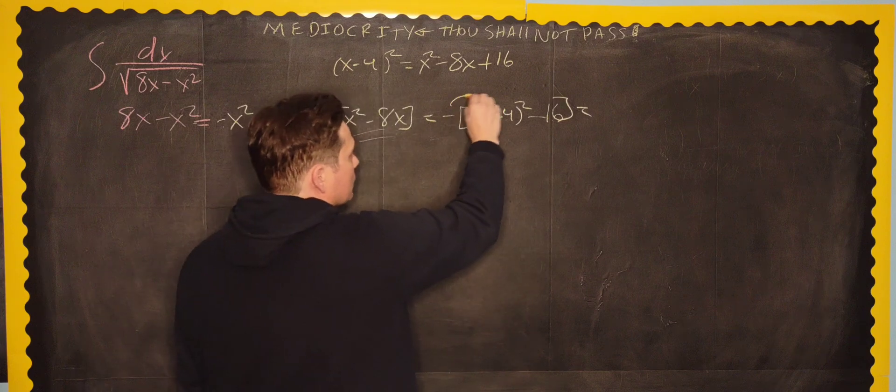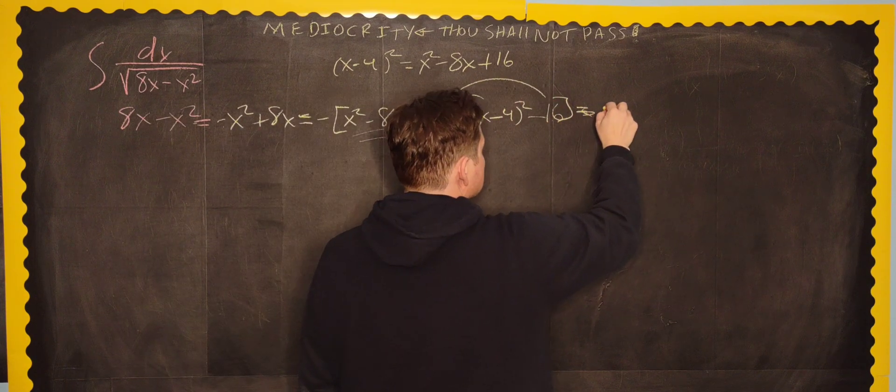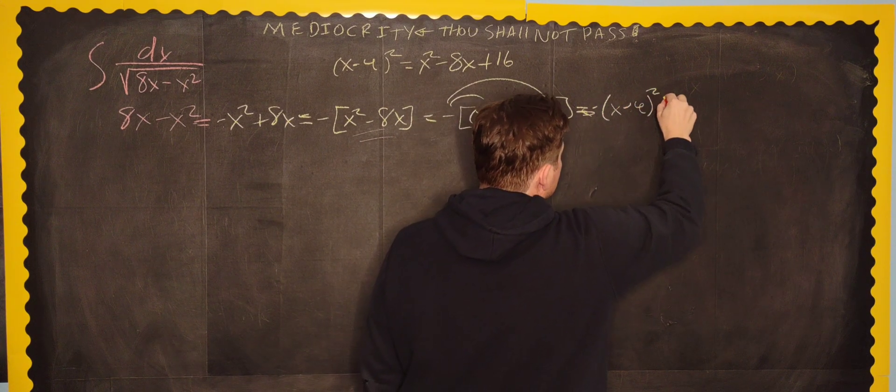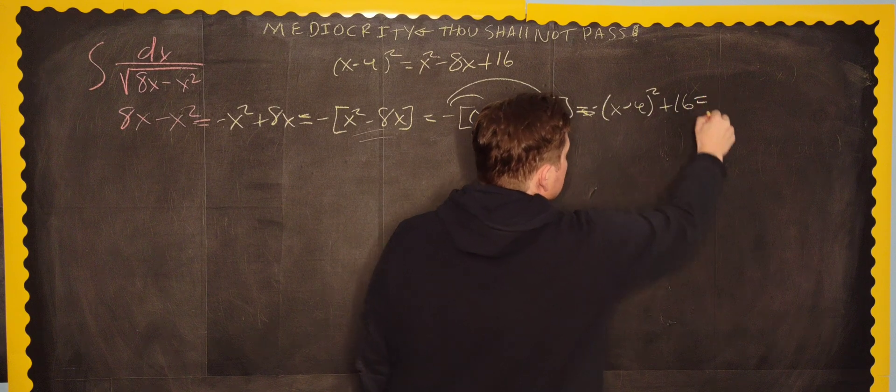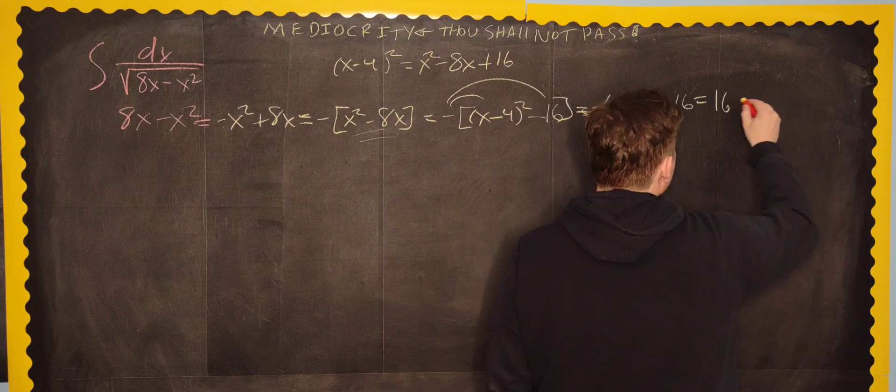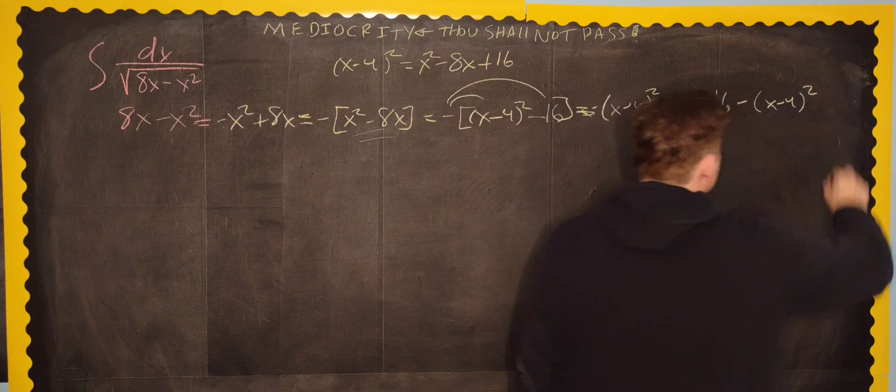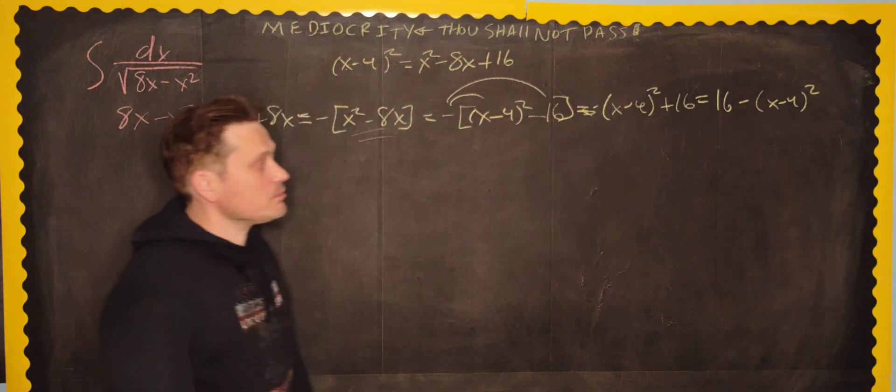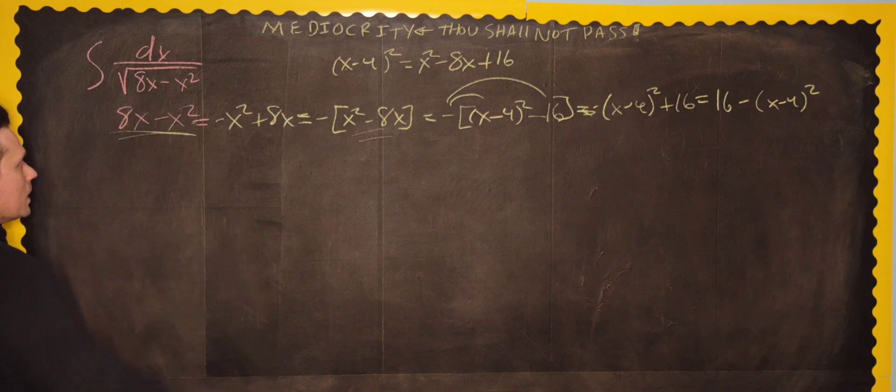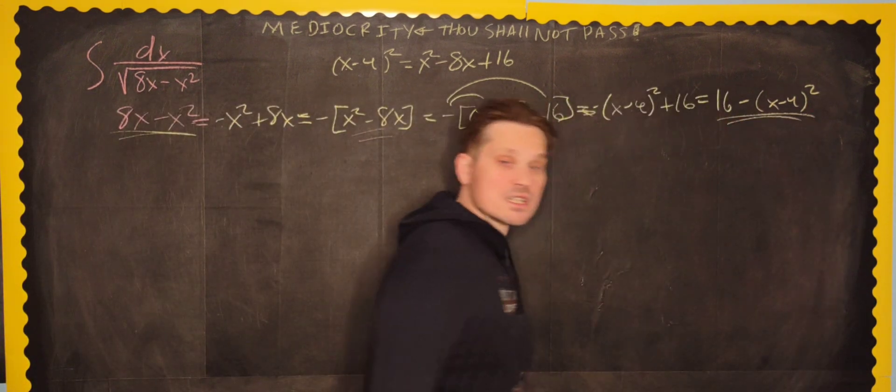And then you distribute the negative 1 back across this way. So you're going to end up with negative x minus 4 quantity squared, and then plus 16, which you can just as well write as 16 minus, within parentheses, x minus 4 quantity squared, this way. We've made this into a form, let me stress this, this 8x minus x squared is the same as this right here. They're interchangeable.